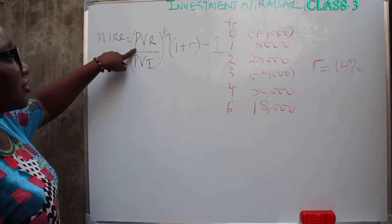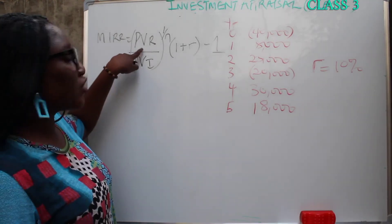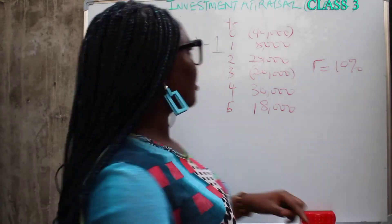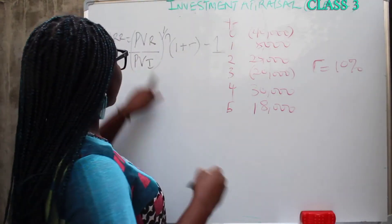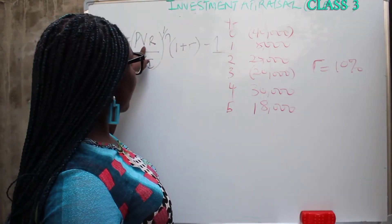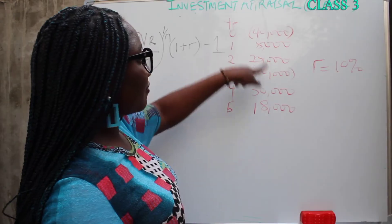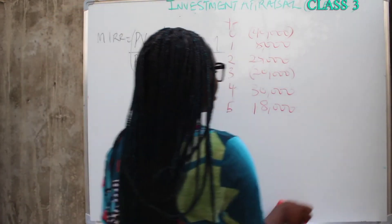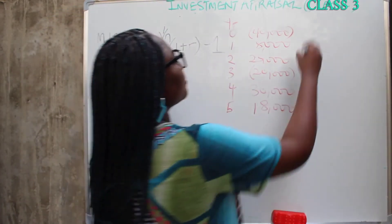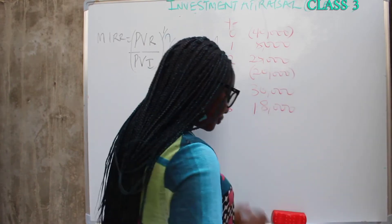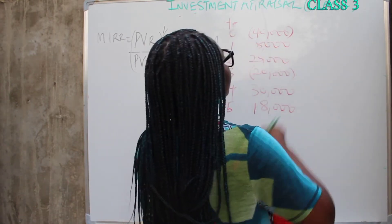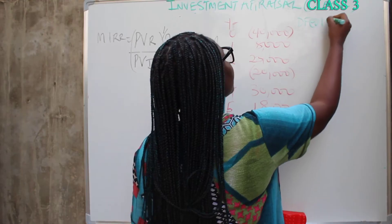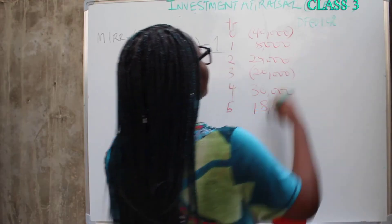To get the present value of your revenue phase means you are trying to discount. You discount at 10%. So your discount factors at 10%: year 0 is 1.000, year 1 is 0.909.